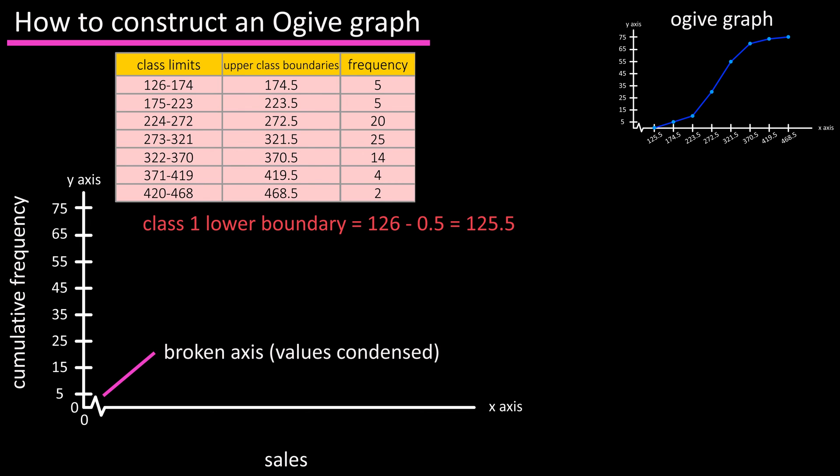This little squiggle here basically means a broken axis, or it lets the viewer know that there are some values kind of scrunched up here. Somewhere to the right and near the squiggle we can mark the lower class boundary for class one, 125.5. Next we'll mark the upper class boundary for class one, 174.5 here.